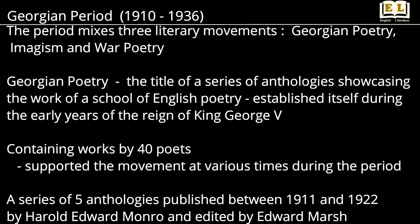Georgian Poetry was the title of a series of anthologies showcasing the work of a school of English poetry that established itself during the early years of the reign of King George V. It contained works by 40 poets who supported the movement at various times during the period. It was a series of five anthologies published between 1911 and 1922 by Harold Edward Monro and edited by Edward Marsh.